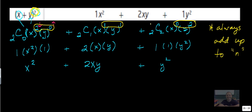So 2 plus 0, 1 plus 1, 0 plus 2. So whatever the n is in the question, those little exponents there have to always add up to n.